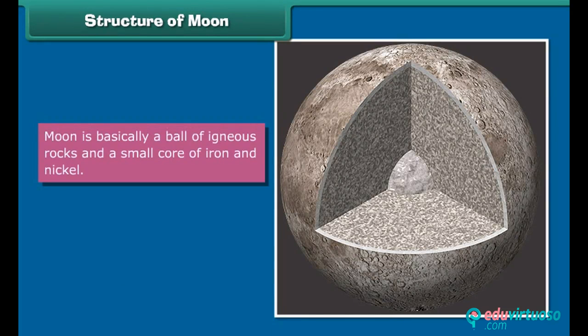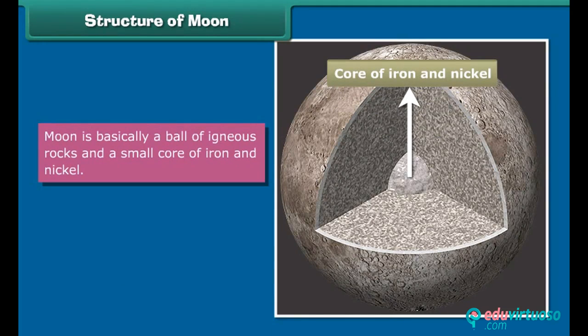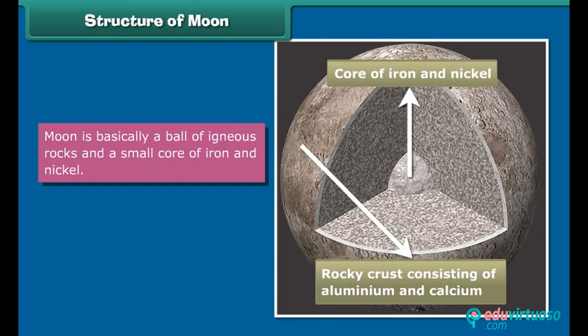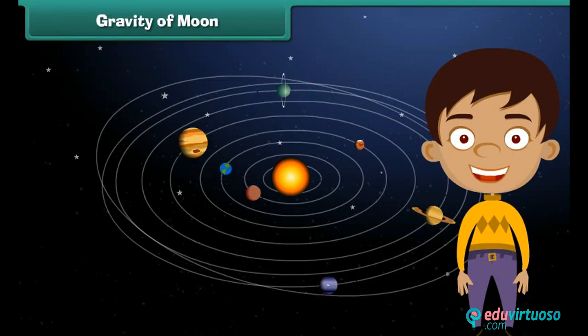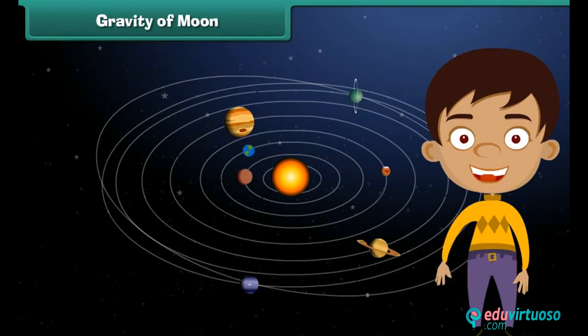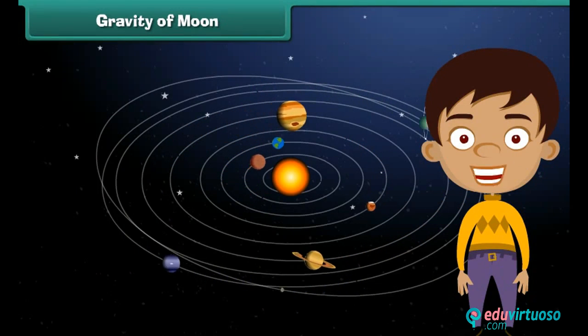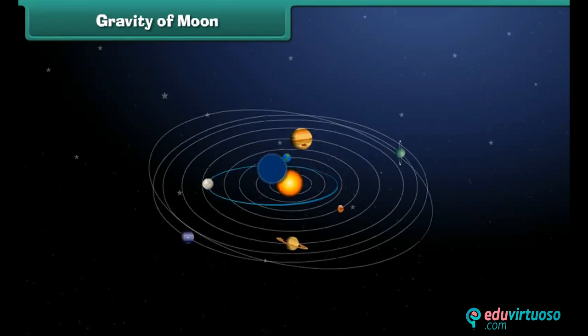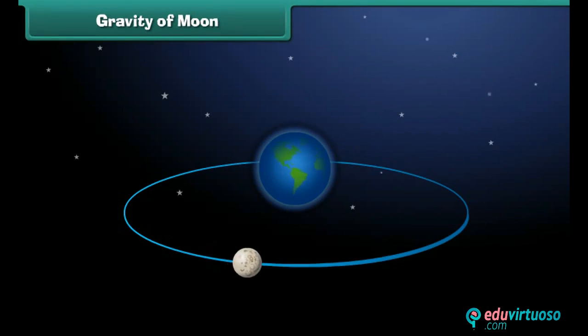Let's look at the interior of the moon. The moon is basically a ball of igneous rocks with a small core of iron and nickel, and there is a rocky crust consisting of aluminium and calcium. While you can find large moons in our solar system, our moon is the biggest compared to the size of Earth.